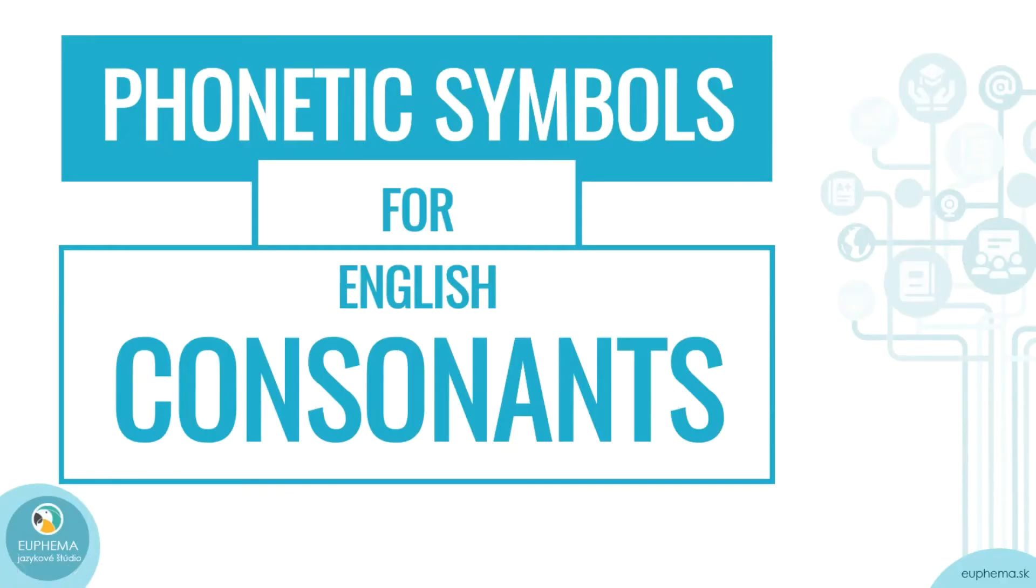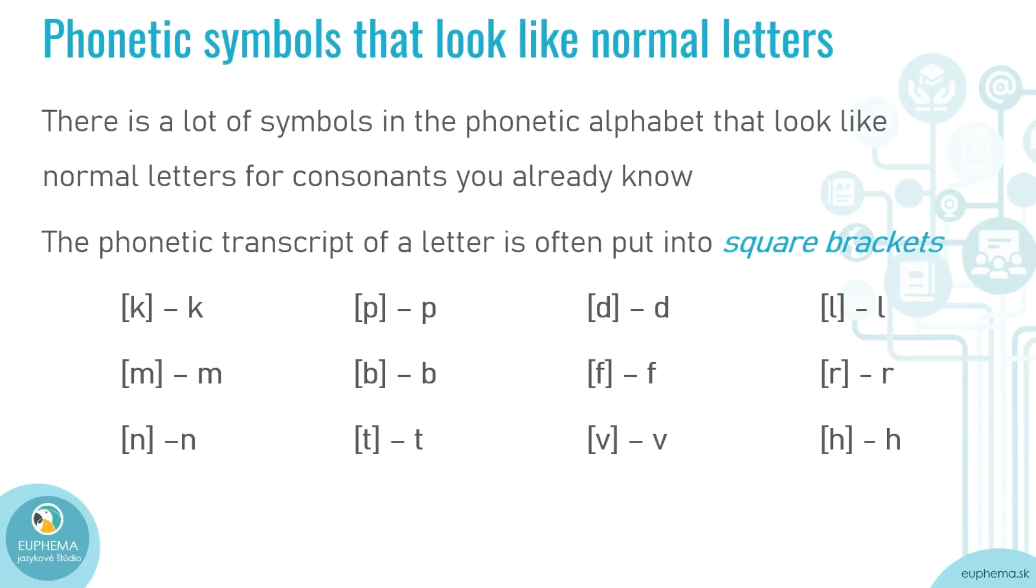Let's start with phonetic symbols for English consonants. There are a lot of symbols in the phonetic alphabet that look like normal letters for consonants. The phonetic transcript of a letter is often put into square brackets. These phonetic symbols actually look the same as the letter they represent.